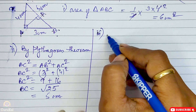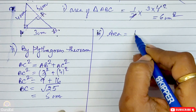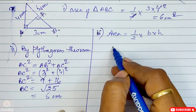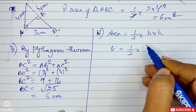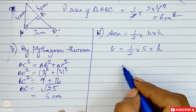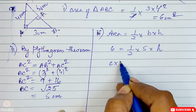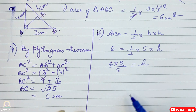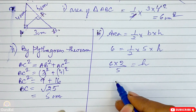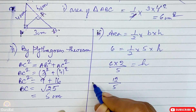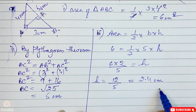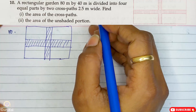So now see how we do it. Area = half into base into height. Area value is 6, so 6 = half into base 5 into height. Cross multiplying: 6 × 2 / 5 = height. So the height = 12/5, which is 2.4 centimeters and this is the answer.